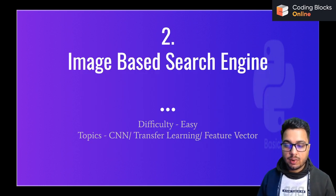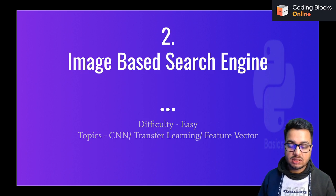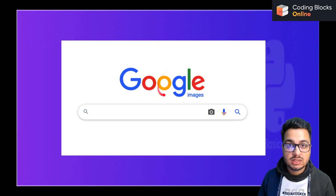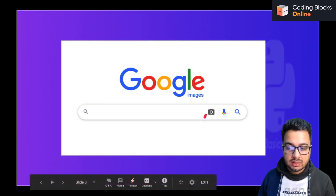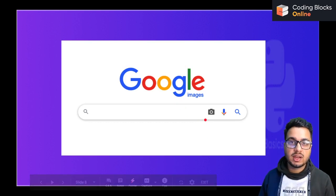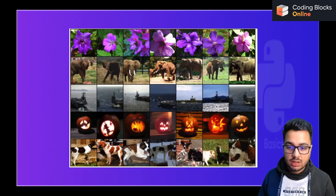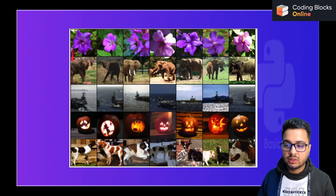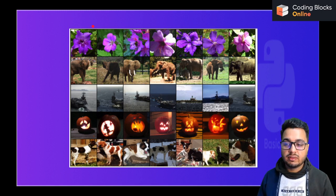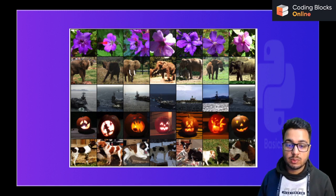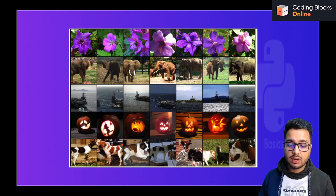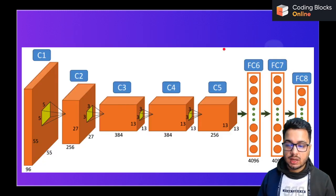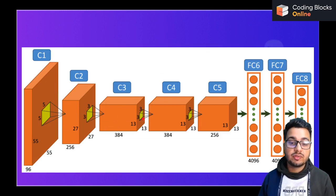The next project is an image-based search engine. You might have used Google search where there's an option to upload an image and get similar images back. You can build something similar. Suppose you give an image of a flower and ask for similar flower images — we achieve this by finding similarities between images based on their feature vectors.